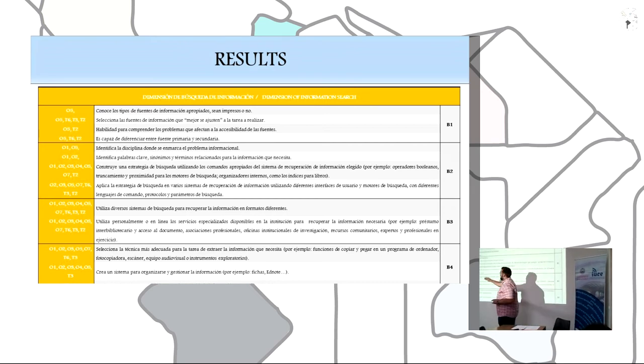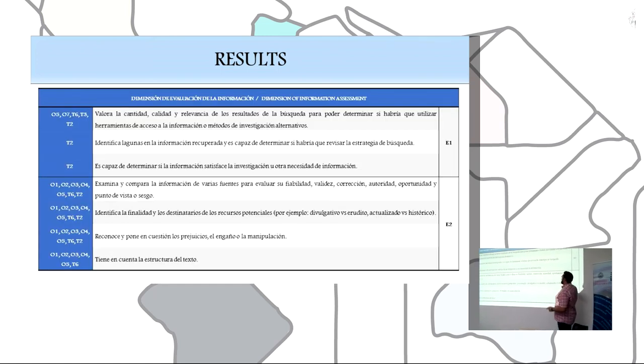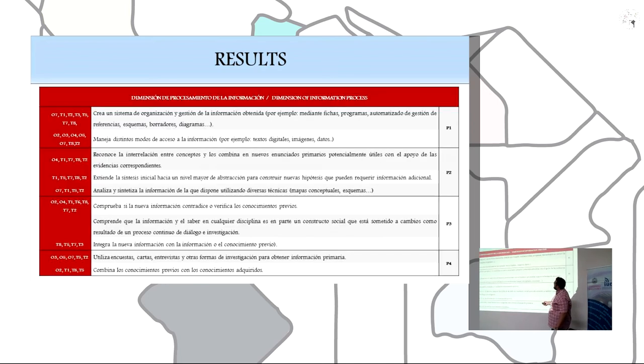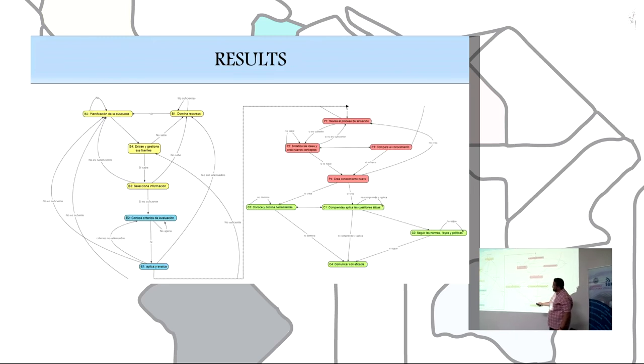It should be known the B2, B3, B4 and E2 are the highest from the dimensions of information process and communication.